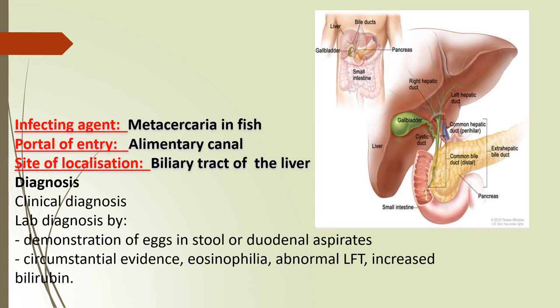The infecting agent is the metacercaria encysted in the fish. The portal of entry is the alimentary canal, and the site of localization is the biliary tract of the liver. For diagnosis, it can be identified by eggs in the stool or duodenal aspirates, eosinophilia, abnormal liver function tests or increased bilirubin.